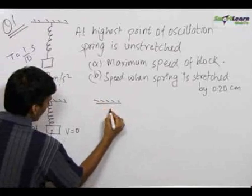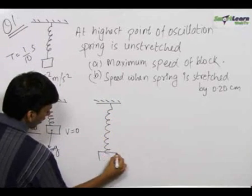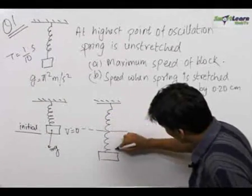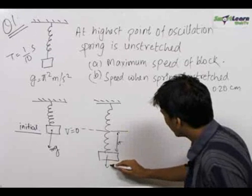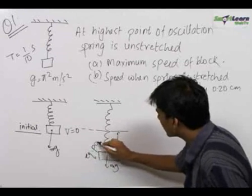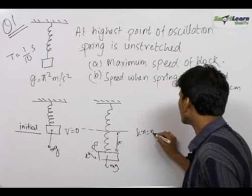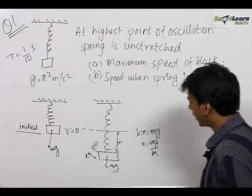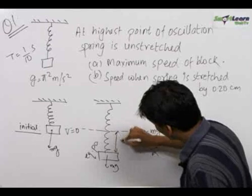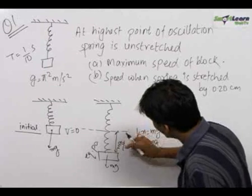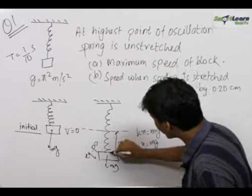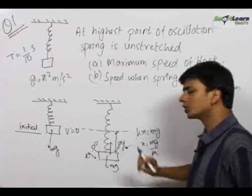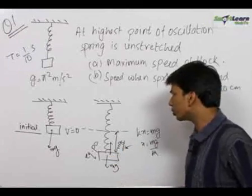The next state comes when the block is stretched by x. At the equilibrium position, kx equals mg, that is x equals mg by k. So after coming mg/k distance downwards, the spring exerts a force equal to k times mg/k, that is equal to mg in the upward direction, which balances mg. The net force on the block becomes 0 and this becomes the equilibrium position of the block.